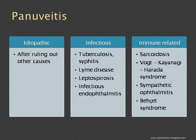The patient has pan-uveitis because we found ciliary flush, aqueous flare, aqueous cells, and also findings in the retina. The causes of pan-uveitis include idiopathic, infectious, and immune-related.